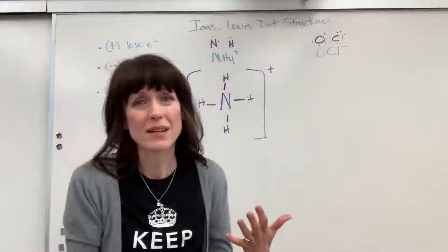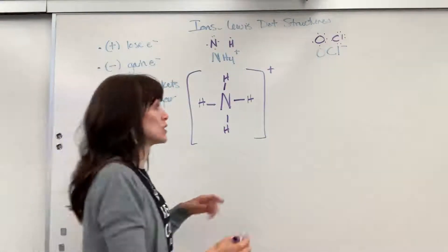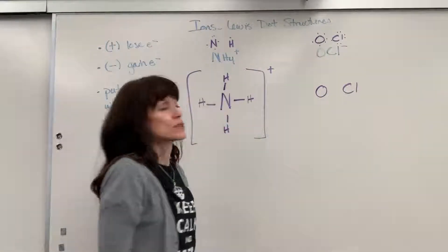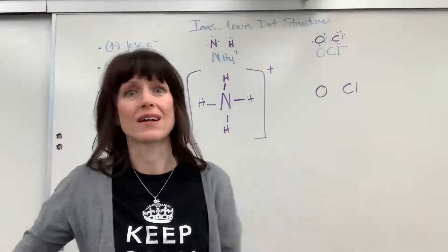So I only have two atoms. This will be a linear Lewis dot. As I draw it, I'll have my oxygen, and then I'm going to have my chlorine. So let's give the chlorine what it needs. It only needs one electron.